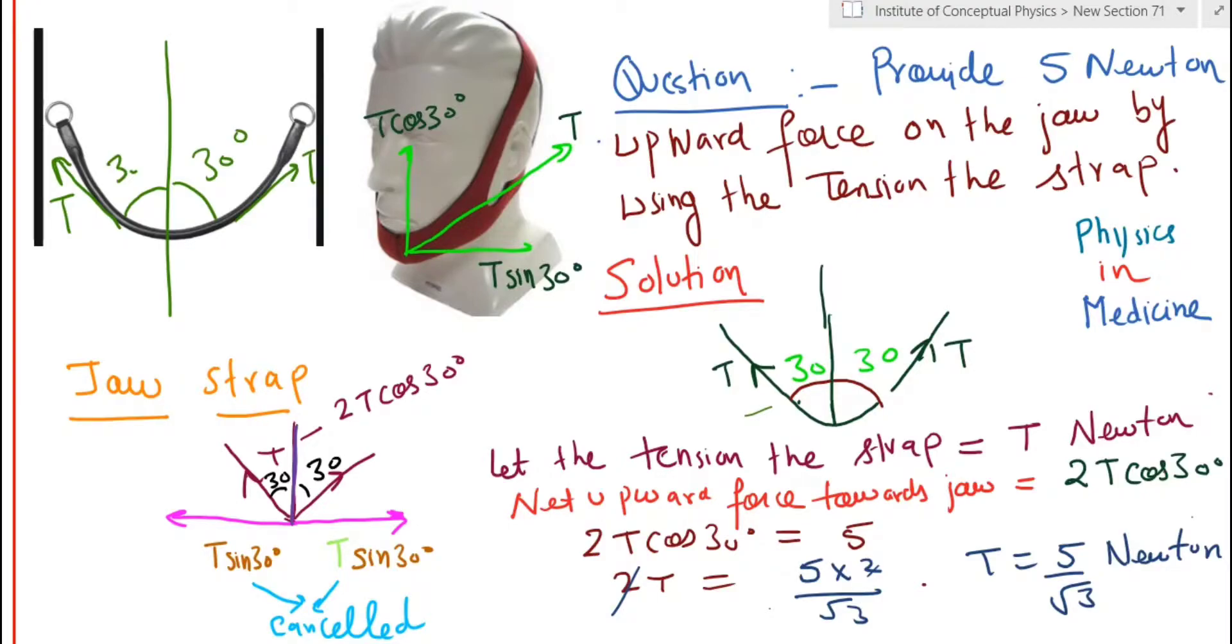So let's proceed forward and solve this numerical. Now you can see the direction of tension is at an angle of 30 degrees on either side. It's a single strap. Therefore, the tension on both sides is T.